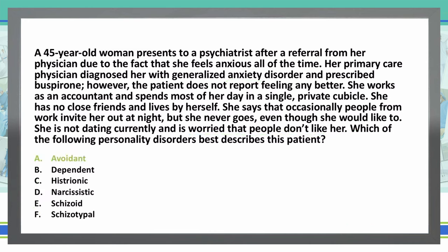A is the correct answer. As mentioned, this is a cluster C personality disorder. We're seeing anxiety and fearfulness or worry about relationships, separation, and control. There is a genetic association with anxiety disorders in patients that have avoidant personality disorder. She fits the mold perfectly — she is sensitive to rejection, socially inhibited, and feels timid or inadequate.